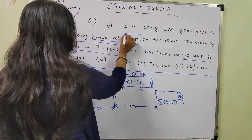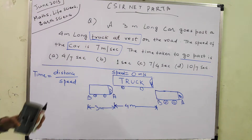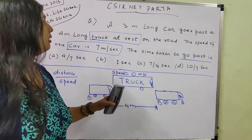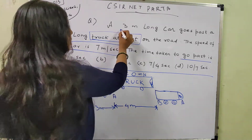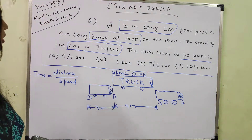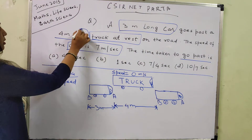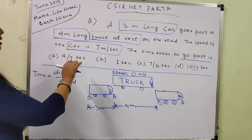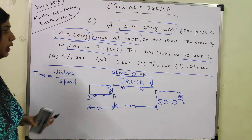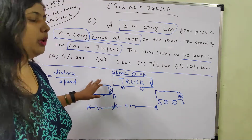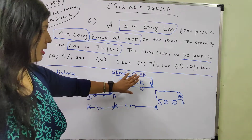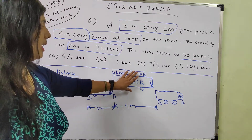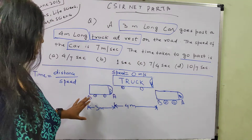The truck is at rest, so the truck has no speed — 0 speed, it is a stationary object. Since the truck is at rest, it can be considered like a bridge which is fixed, constant, a stationary object. Length of the car is given as 3 meters and the truck is 4 meters long. The car is 3 meters, truck is 4 meters, truck has 0 speed and is at rest. Speed of the car is 7 meters per second.